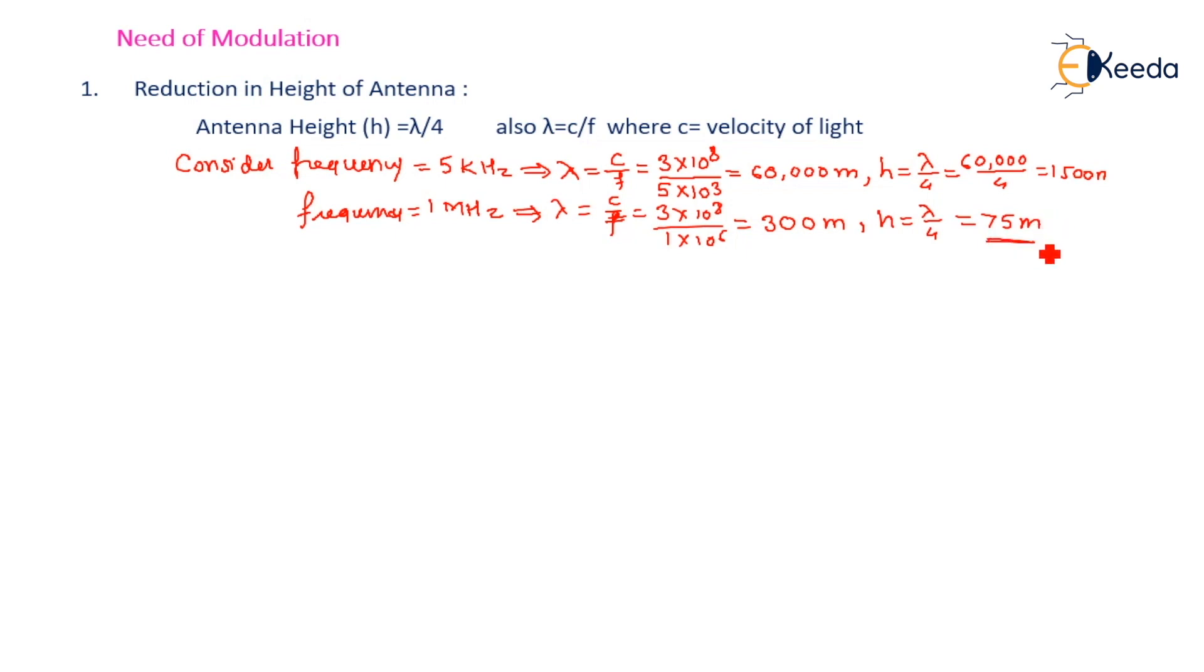Such a 75 meter height, practically it is possible. We can install an antenna vertically with a height of 75 meters. Hence the first assumption is clear: modulation helps to reduce the height of antenna.